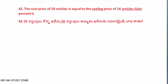Next question: The cost price of 19 articles is equal to the selling price of 16 articles. The gain percentage is not accepted as given — what is the gain percent? CP of 19 articles equals SP of 16 articles. Dividing by selling price, that equals 16 into 100, which gives 300 by 16, and cancelling the case of 16.